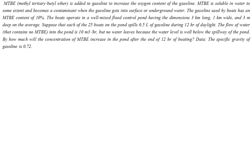We are given the specific gravity of 0.72 for gasoline. In the problem statement, we have a system of the pond in which 25 boats are boating and each boat consumes 0.5 liters of gasoline. We are further told that the MTBE composition in the gasoline is 10%. We are also given the volume of the pond, which we can calculate by multiplying 3 km, 1 km, and 3 m with consistent units.